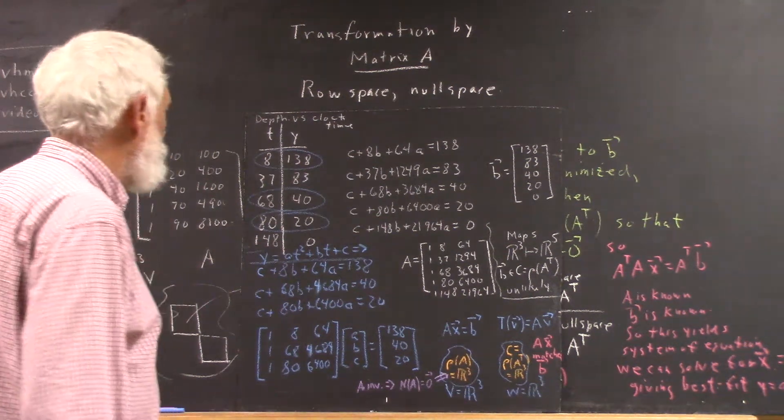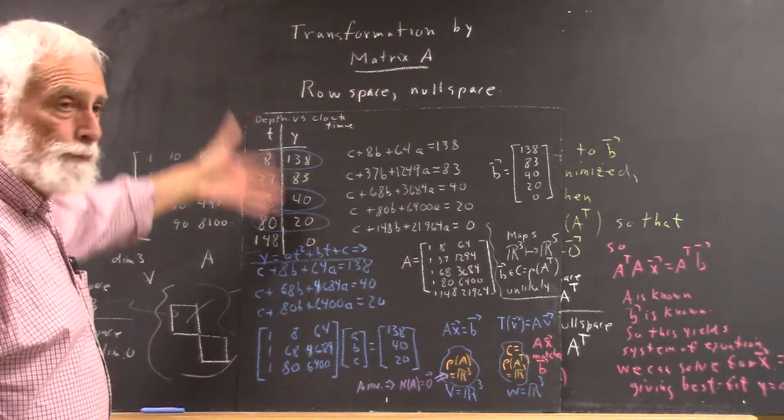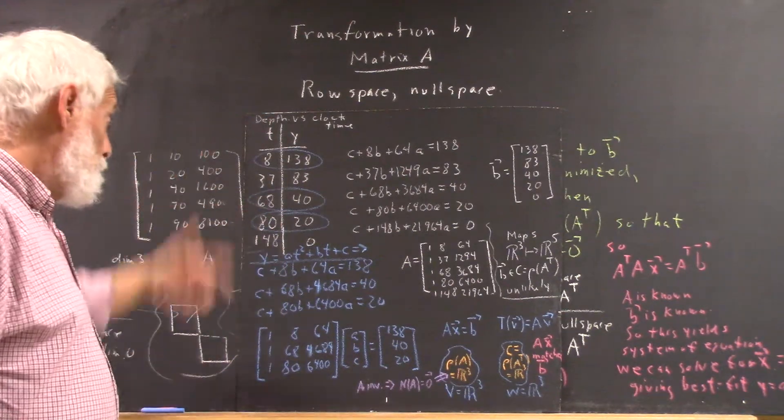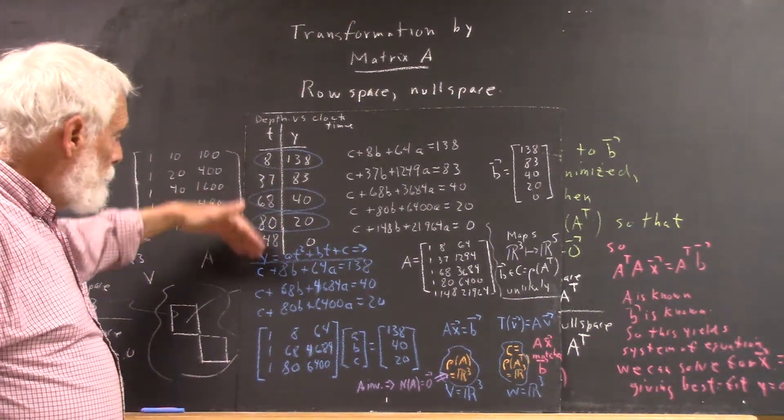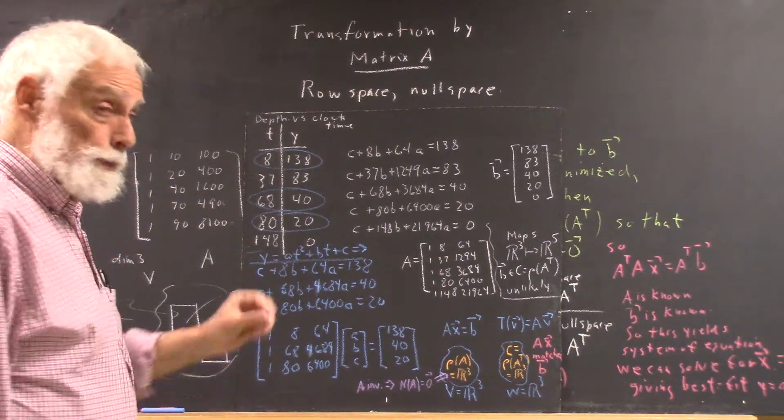In the depth versus clock time model, we typically have five data points. We could get more or fewer, but typically the number of data points we observed was five.